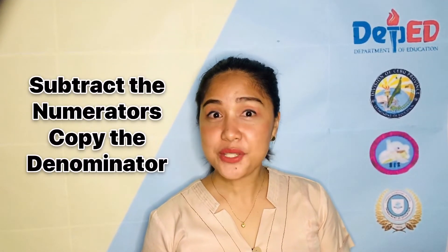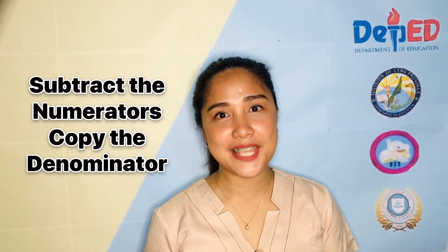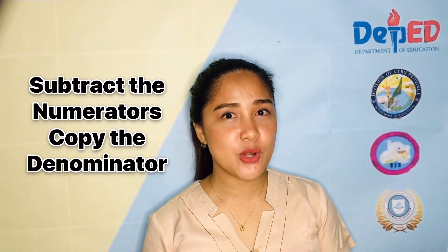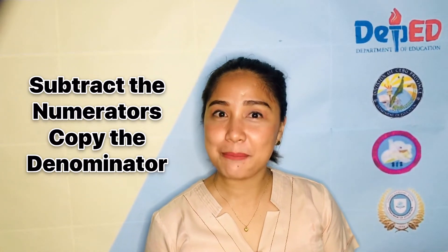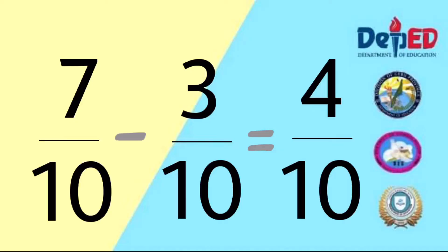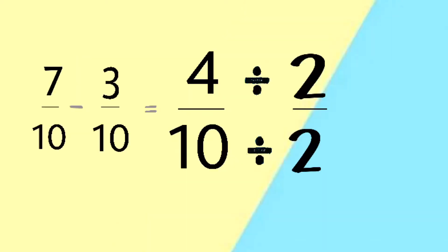Next, taking away or subtracting is exactly the same. You only have to subtract the numerators, then copy the denominator. 7 tenths minus 3 tenths equals 4 tenths. 4 tenths can be simplified using the common factor 2.